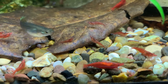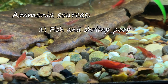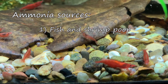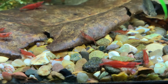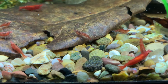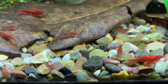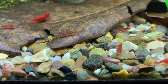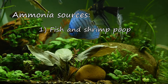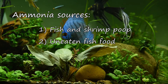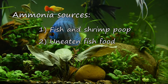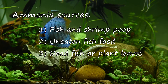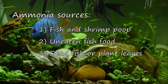When our fish and shrimp go to the bathroom, their waste is high in ammonia, and ammonia is essentially highly toxic to almost all of our aquarium inhabitants. There can be other sources of ammonia in our fish tank, and this includes uneaten food breaking down or bits of organic matter, such as dead fish or plant leaves that are breaking down in the water column.